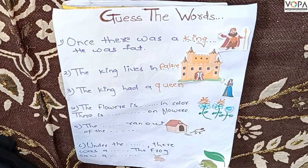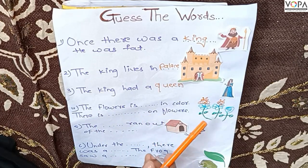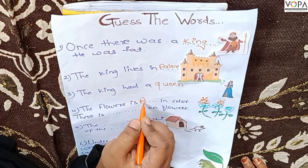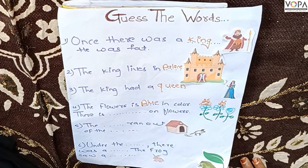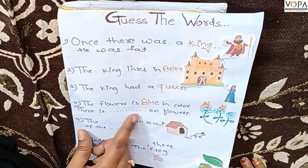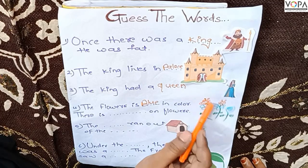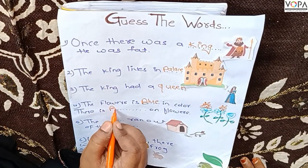Next sentence: The flower is in blank blank — in color. What color are the flowers? Blue. Very good. Blue color. There is a blank blank on flowers. Who is this? Butterfly. Good.